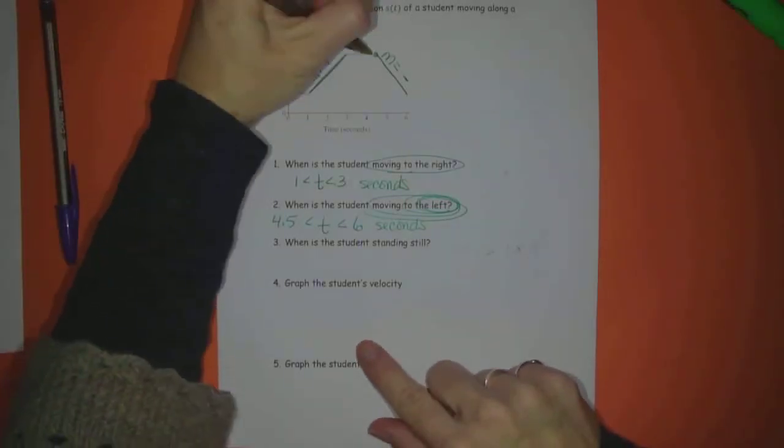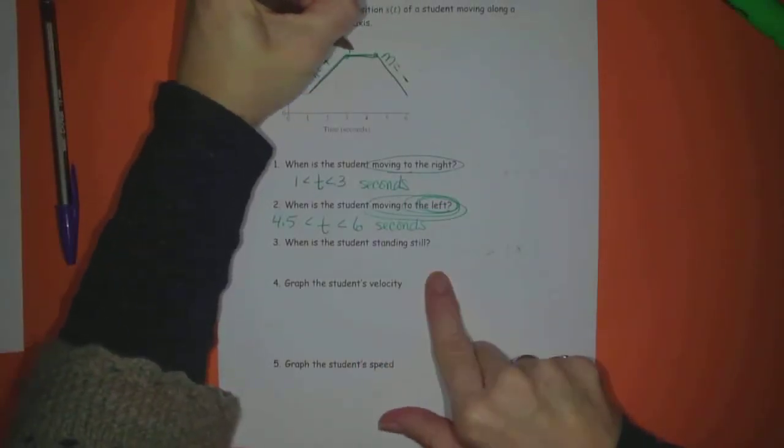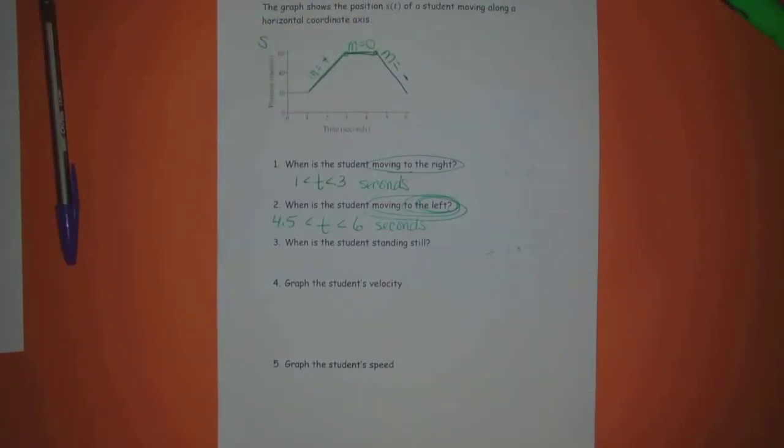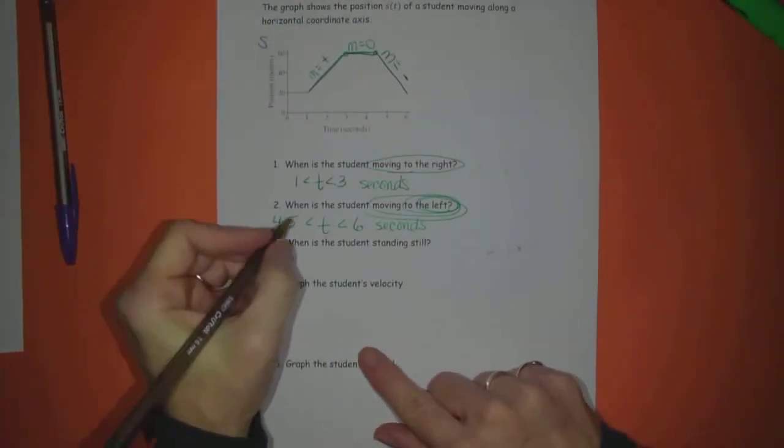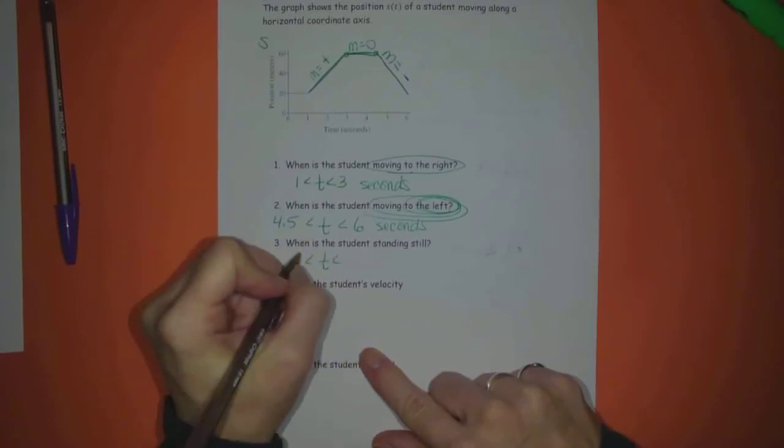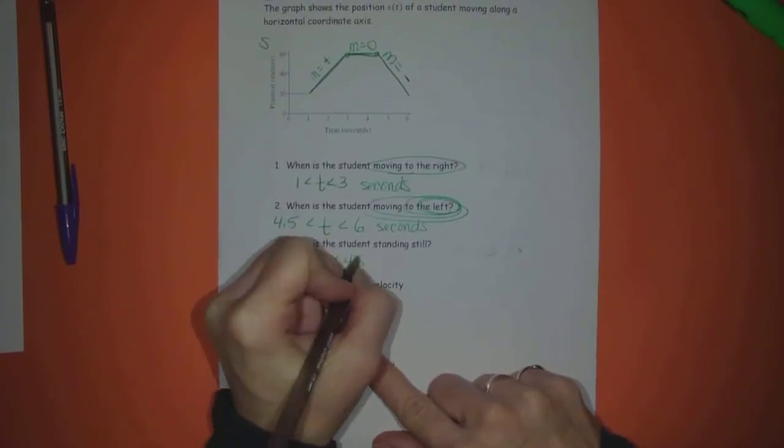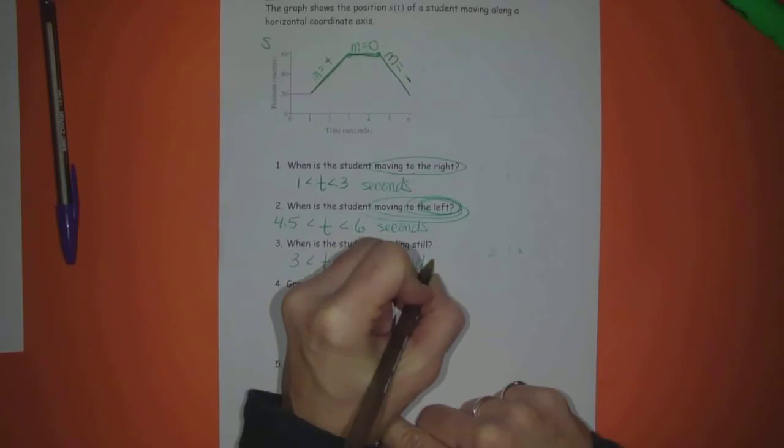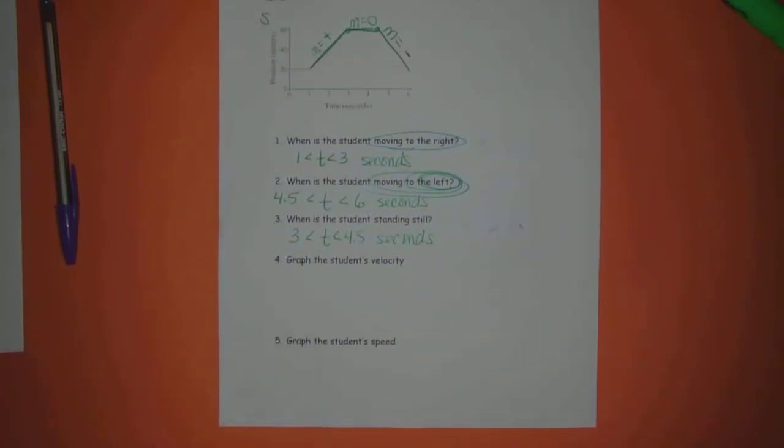When is the student standing still? Well, that would be right here where the slope is zero. Velocity is zero. Velocity is slope. So I'm going to say t between 3 and 4.5 seconds. And then we have two graphs here. They want us to graph the velocity and graph the speed. So let's start by graphing velocity.